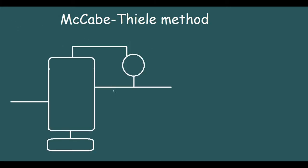So first let me show a diagram. This is the distillation column. Feed enters the column from here. This feed can be a vapor-liquid mix, a subcooled liquid, or a superheated vapor, and depending on the quality of the feed we will have the feed line in the graph.